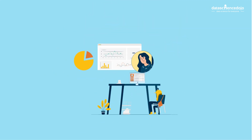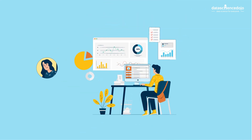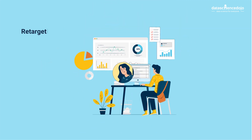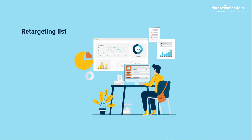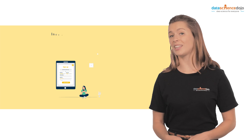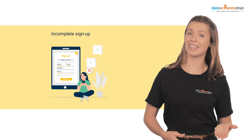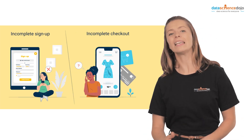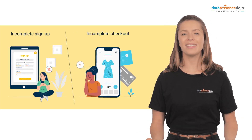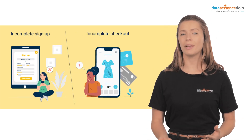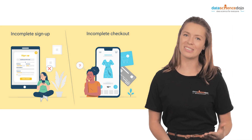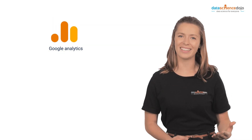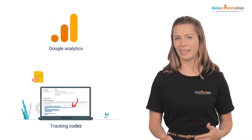The first thing that companies need to do is build a retargeting list. This could be via criteria like incomplete signups or incomplete checkouts. Gathering these insights might require using tools like Google Analytics or tracking codes.